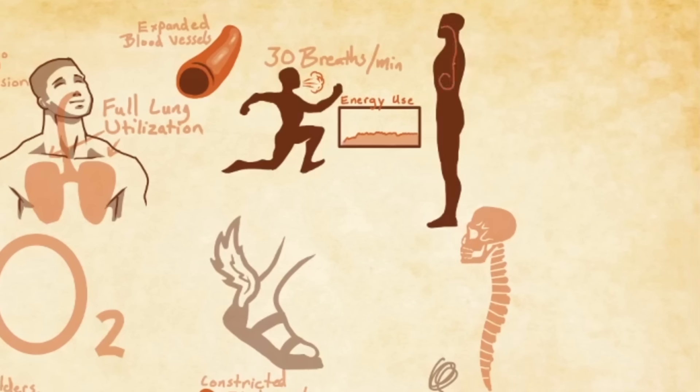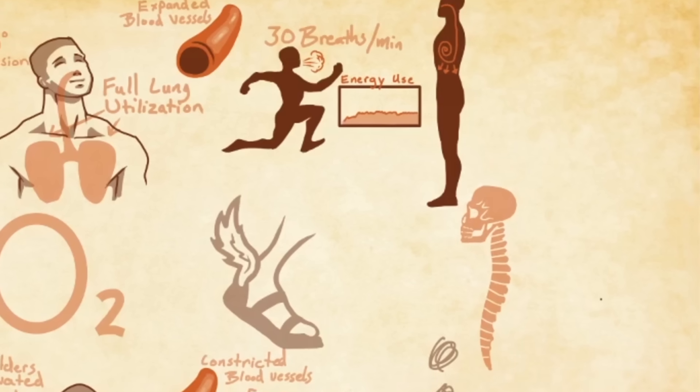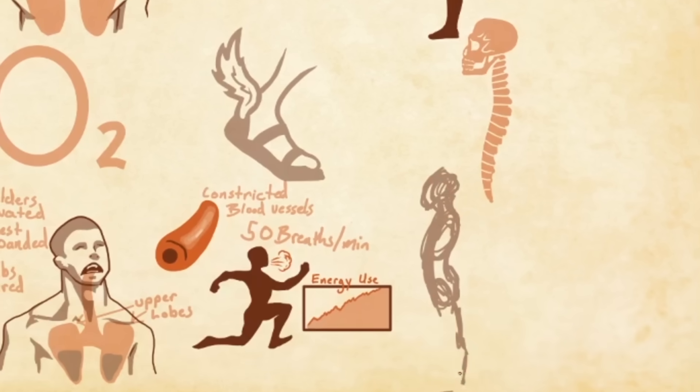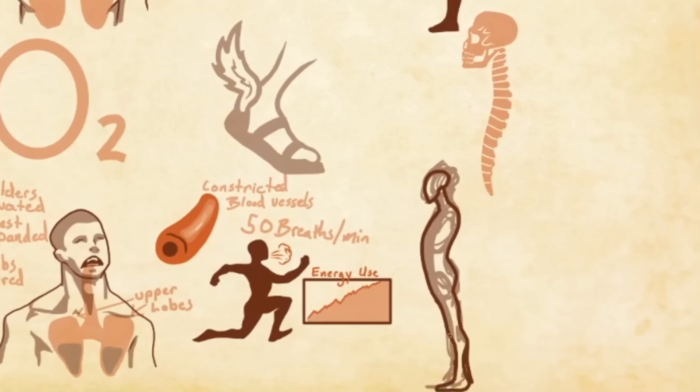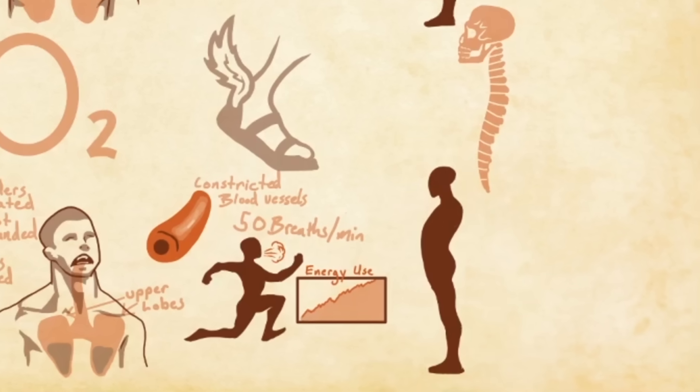When breathing through the nose, the naturally increased air turbulence drives air into the lower lungs, more fully activating the diaphragm. This has the effect of increasing intra-abdominal pressure underneath the diaphragm, helping to stabilize the core and promote tall, healthy posture.